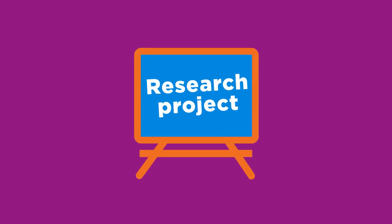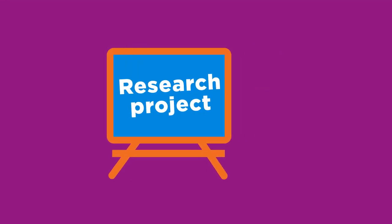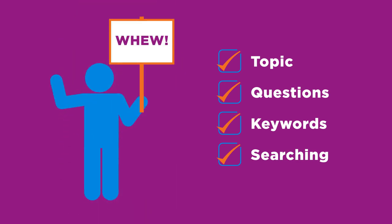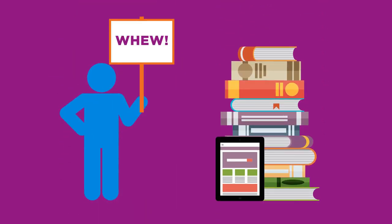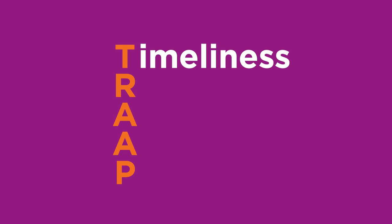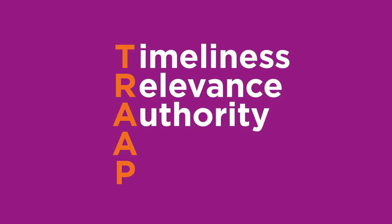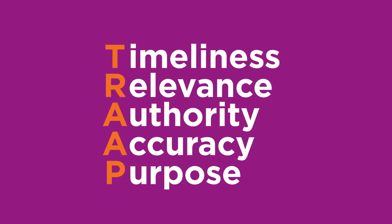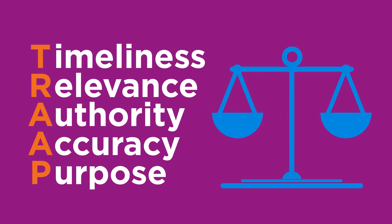You've been assigned a research project and you've done some of the work already — you have your topic, came up with your research questions, selected keywords, and did some searching. Now you have a pile of potential sources. How will you decide which sources to use? One method for evaluating sources is TRAP. TRAP stands for Timeliness, Relevance, Authority, Accuracy, and Purpose.